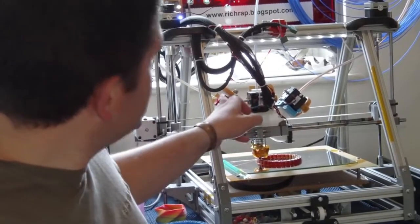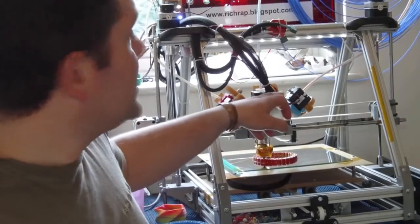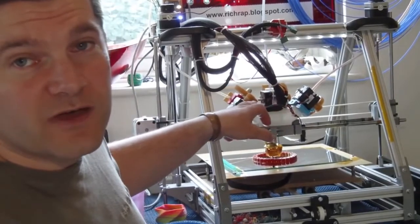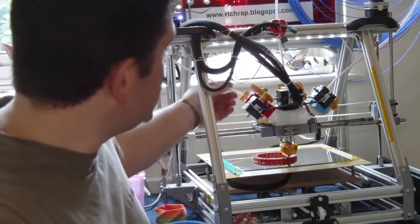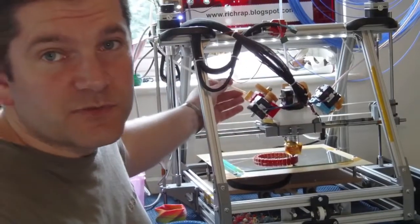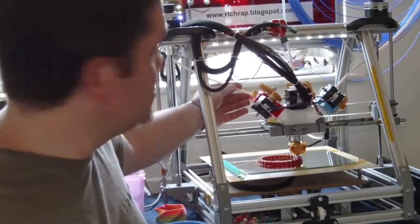In this particular one I've got it set up with yellow, blue, and red 1.75mm filaments from Faberdashery. These tubes here are just to stop the filaments from getting tangled up. It's not a Bowden setup, it's a direct drive setup.